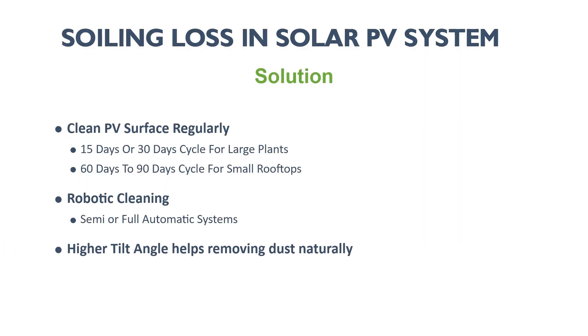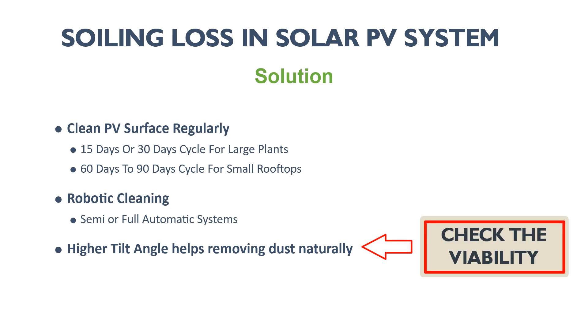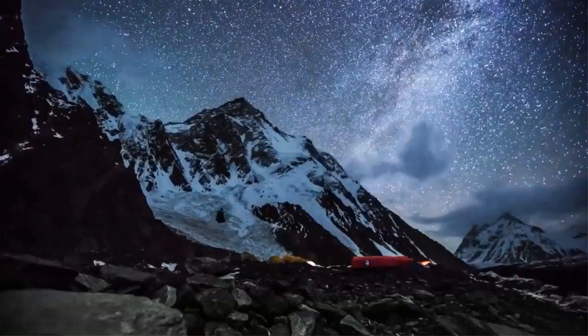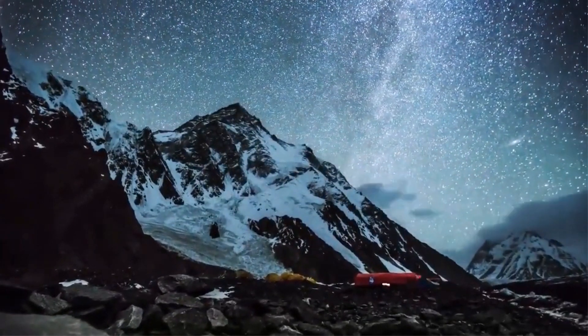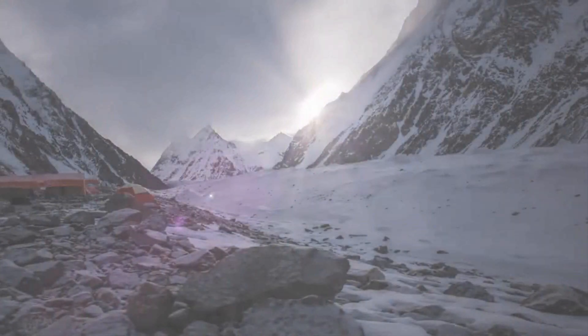Soiling loss is not constant throughout the year. PV arrays with a higher tilt angle will also naturally shed off dust accumulation from their surface. However, if the suggested tilt angle for the installation location is low, it is not viable to increase it, as it increases the cost of the mounting structure and causes losses due to reduced inclined irradiance. Soiling losses are strongly dependent on rainfall, and as weather and seasons change, this value also changes.